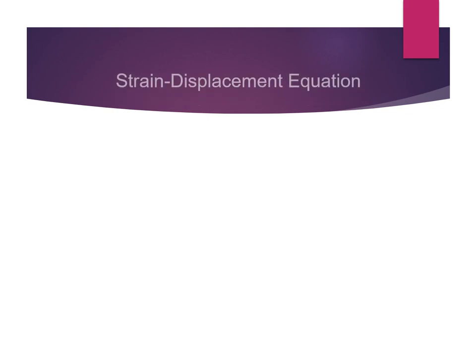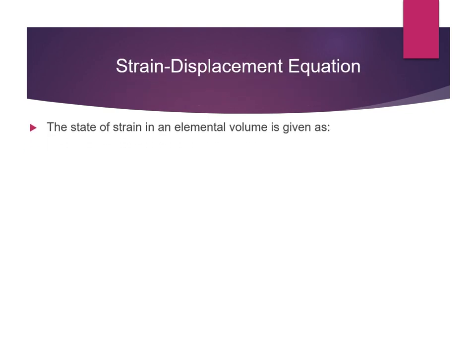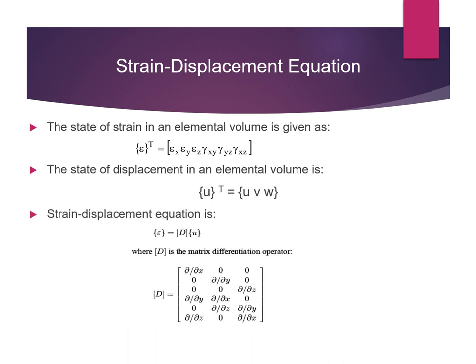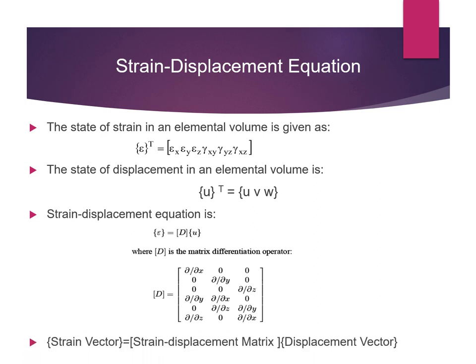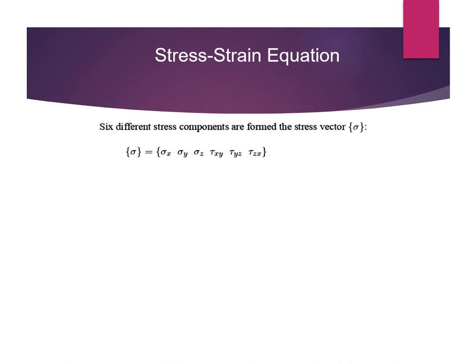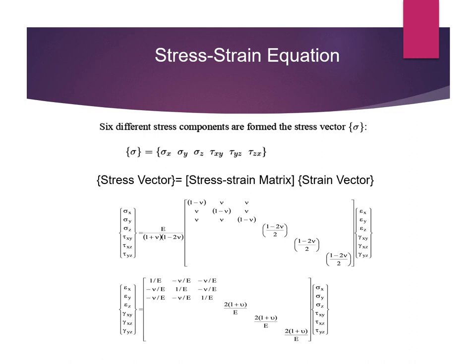The strain-displacement equation: consider an elemental volume with strains in the x, y, and z directions, and shear strains in the xy, yz, and xz directions. Displacements are u, v, and w. The strain-displacement equation is: strain vector = D · displacement, where D is the differential operator matrix. The stress-strain equation involves six stress components: normal stresses sigma x, sigma y, sigma z, and shear stresses in the xy, yz, and zx directions. The stress vector equals the stress matrix times the strain vector.